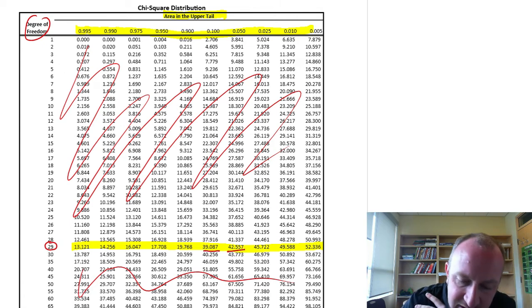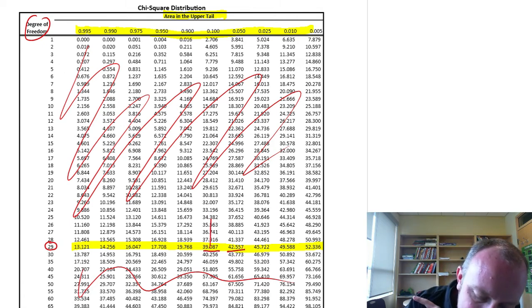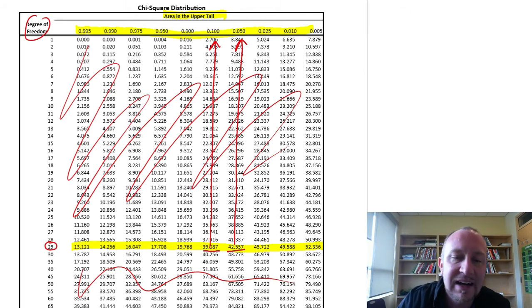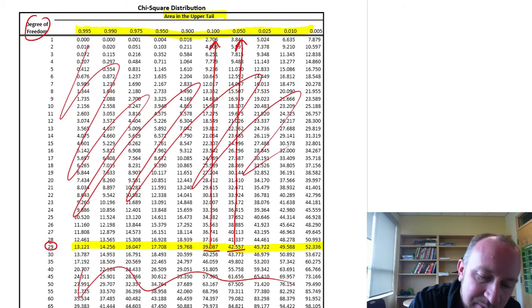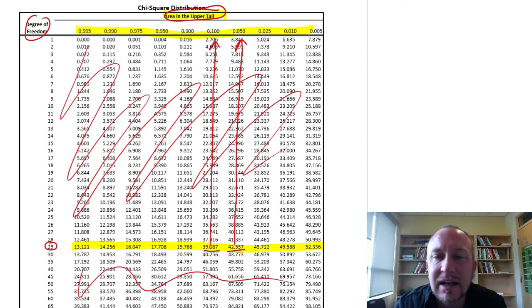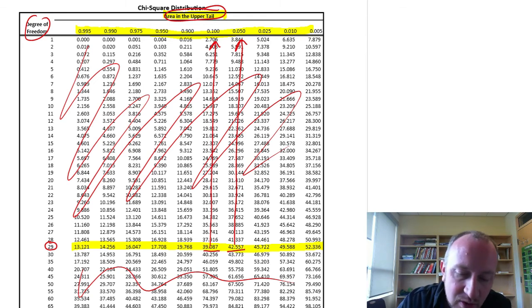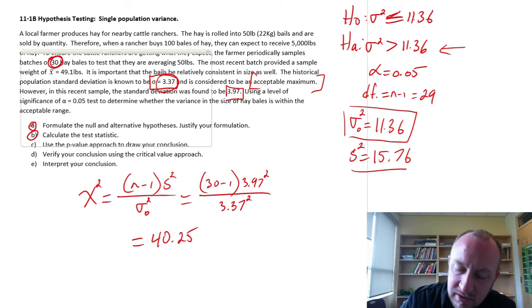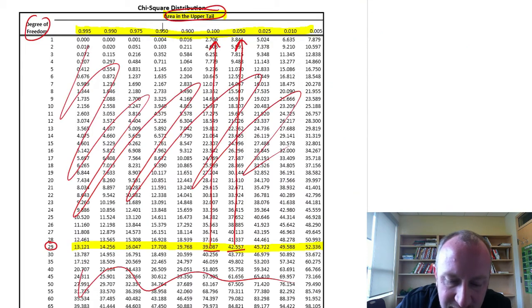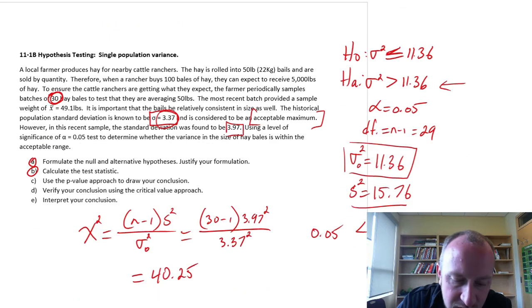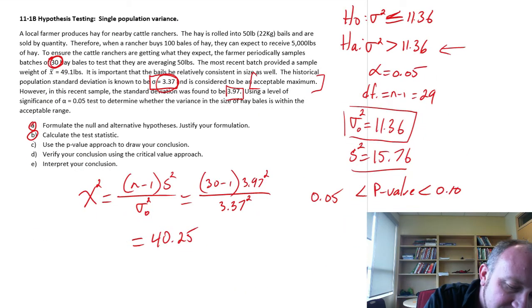Well, it's between these two values, which means that my probability is between these two values, 0.1 and 0.05. And this is an upper tail test, and that is giving me upper tail probabilities. So I don't have to make any adjustments to these values. Those are my p-values. So I have my p-value is less than 0.1, greater than 0.05. So we've got everything we need for our p-value approach.